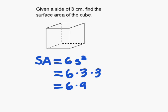So 6 times 3 times 3, and then 6 times 9, which gives me 54.